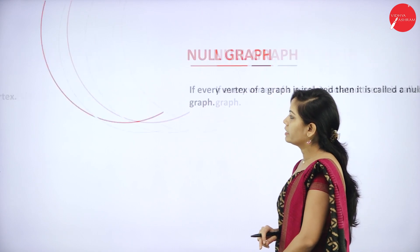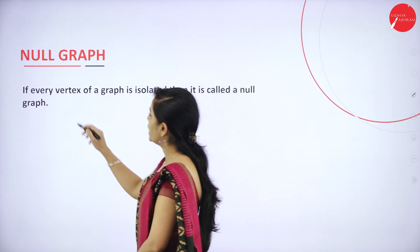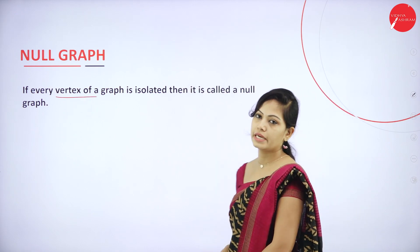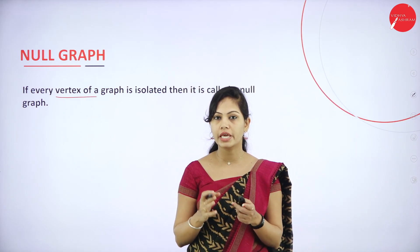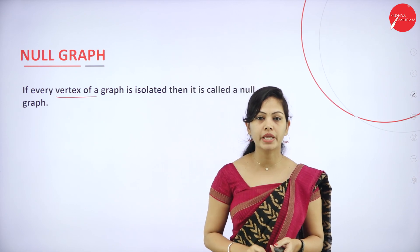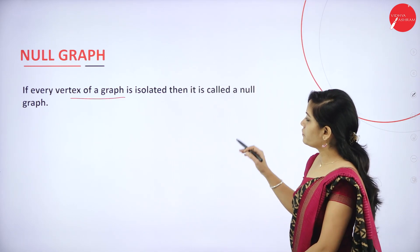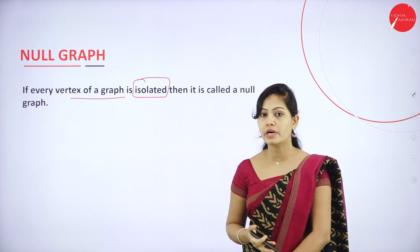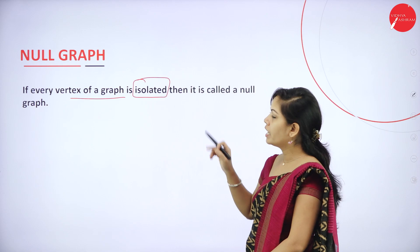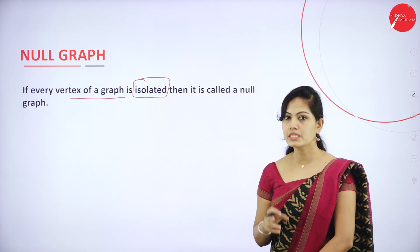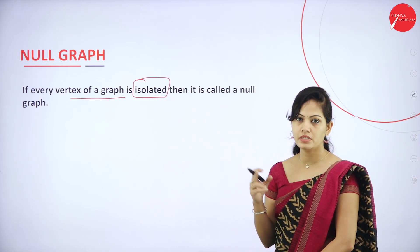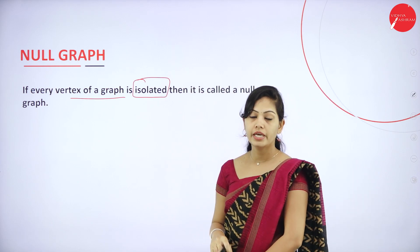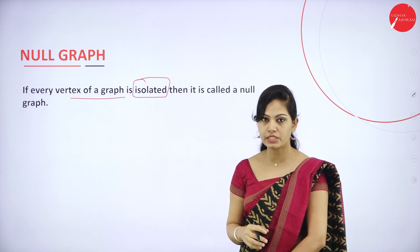Next is null graph. If every vertex of a graph is isolated, then it is called a null graph — also called a zero graph or empty graph. A vertex is isolated if it has no incident edges. So if every vertex in the graph has no incident edges, the entire graph is a null graph.